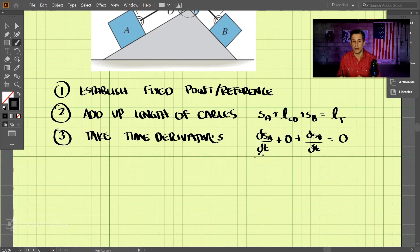Now going down here, we know that the derivative of the position with respect to time is known as the velocity. So we have the velocity of A plus the velocity of B equals zero.